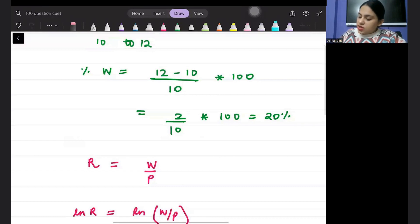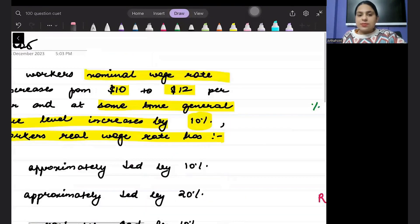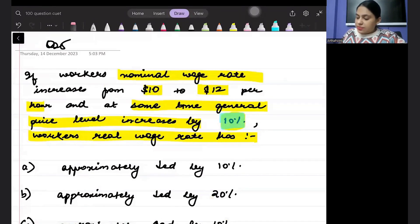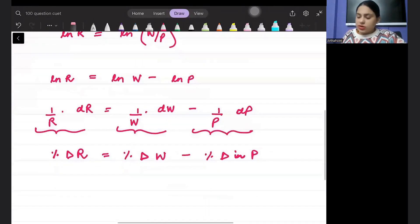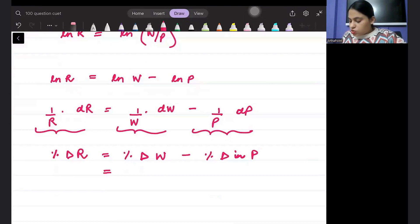Nominal wage is increasing by 20% and price is increasing by 10%. Toh 20% or 10%? So, 20% and 10%. This is 10%.